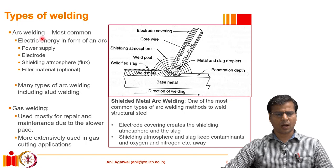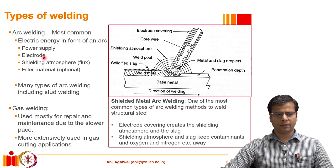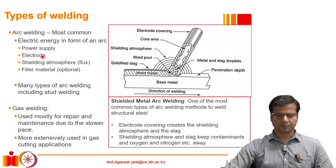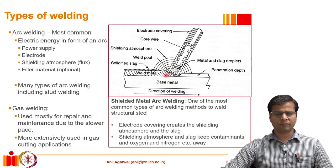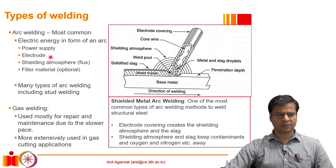Arc welding usually requires a power supply — electricity — and an electrode. All of us must have witnessed some type of arc welding in our lives. The electrode typically doubles as a filler material, which fills the gap between the two metals being joined, though there are other varieties we will discuss in a moment.